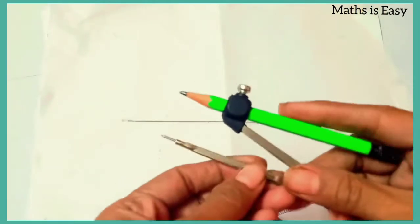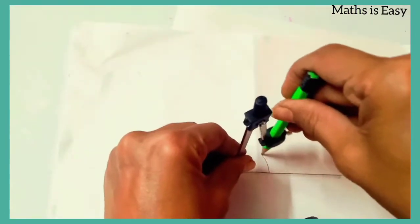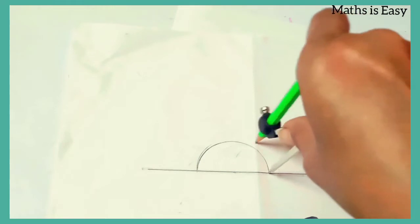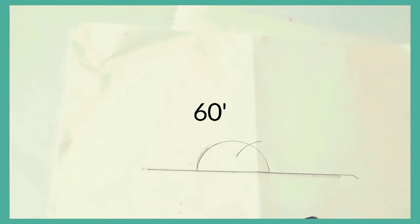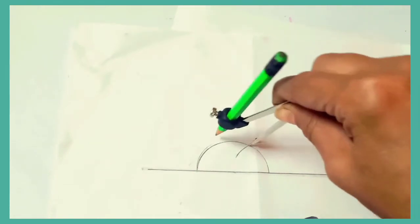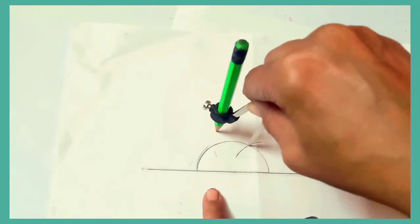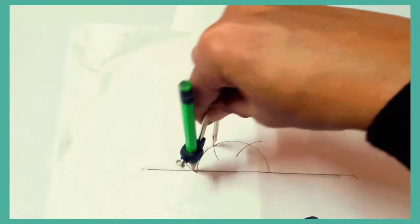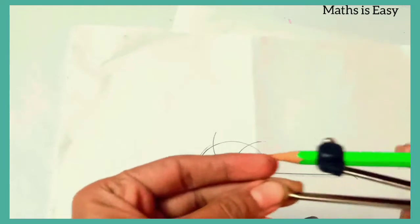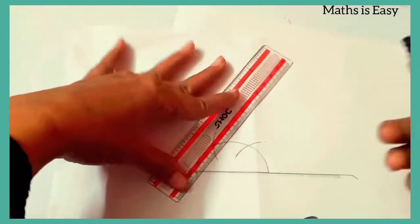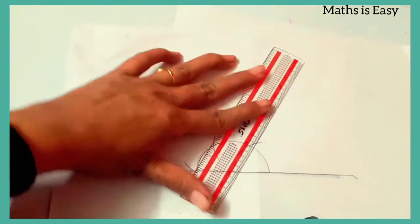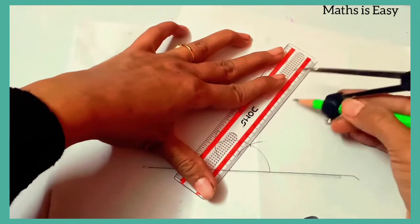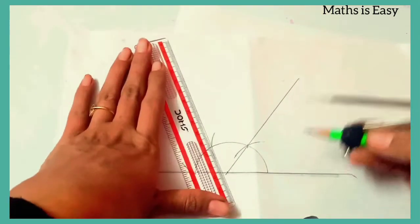To draw these angles, we need to draw a straight line. Take the compass and measure any arc at this point. Again, keeping the compass at the same radius, cut another arc — this first arc shows the 60 degree angle. Keep the point of the compass again at the arc and cut another arc — the second arc shows 120 degrees. Placing the compass here shows 180 degrees, which is the straight angle.